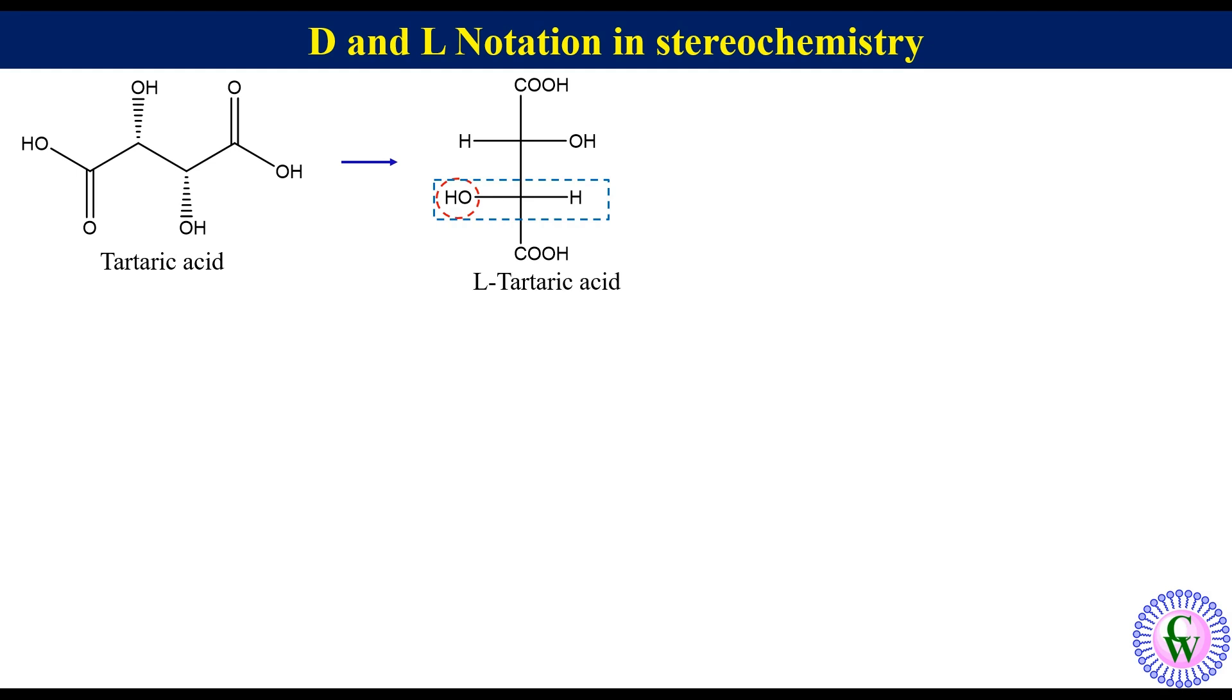The last example which we are going to discuss is fructose. Here also it is drawn in flying wedge formula. So we have to convert into Fischer. In this molecule the ketonic carbon has the most oxidation state. So in the Fischer projection formula for determining DL configuration it should be on the top.